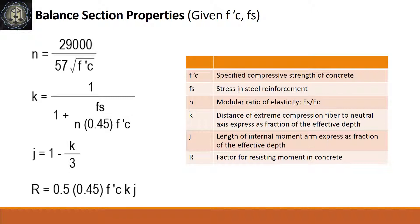k, the height of neutral axis expressed as fraction of the effective depth; j, the length of internal moment arm expressed as fraction of the effective depth; and R, the factor for resisting moment in concrete.